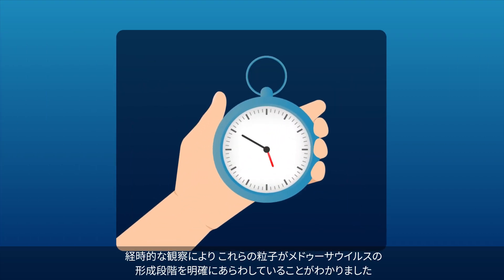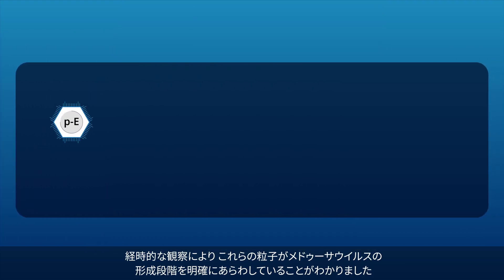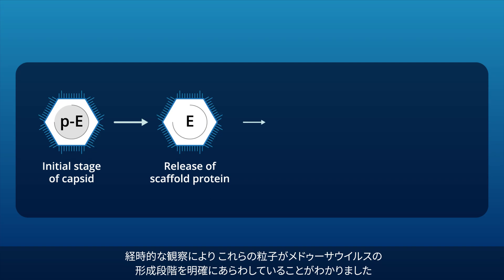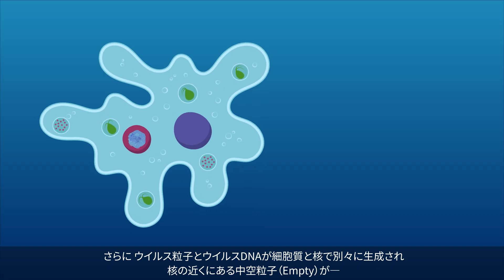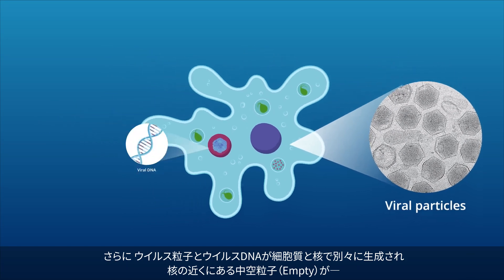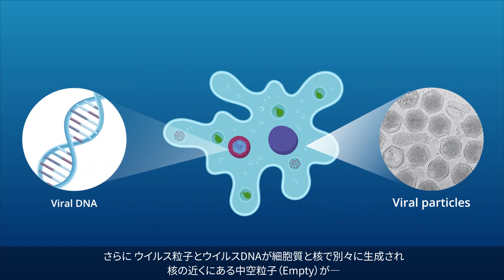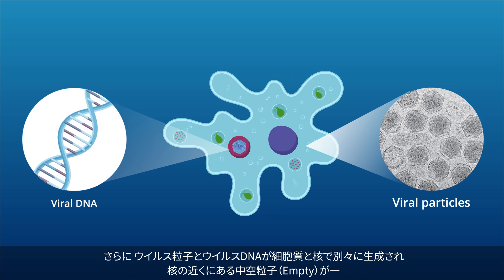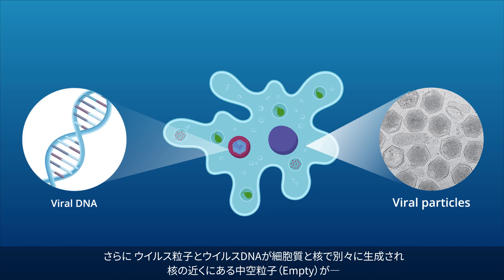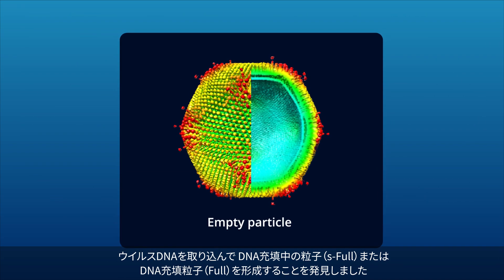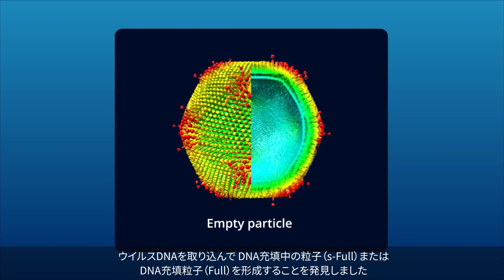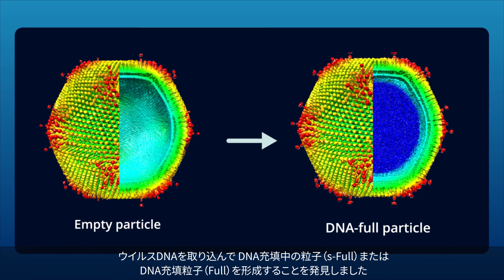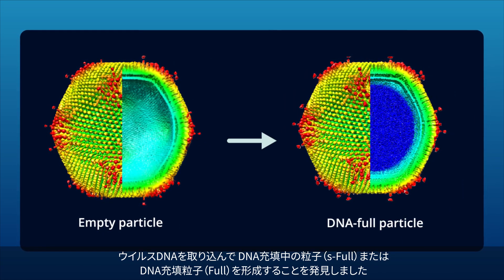Using time course analysis, they found that these particles in fact represented four distinct stages of maturation of the Medusa virus. Furthermore, the team discovered that viral particles and viral DNA were produced independently in the cytoplasm and nucleus respectively, and the empty particles found near the host nucleus could incorporate the viral DNA to convert into S-full or DNA full particles.